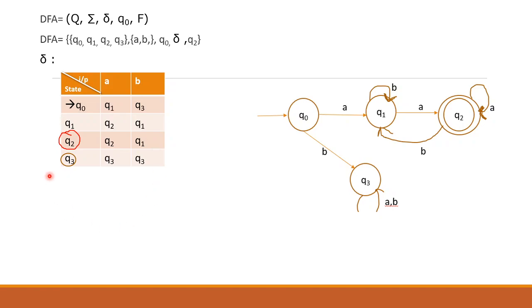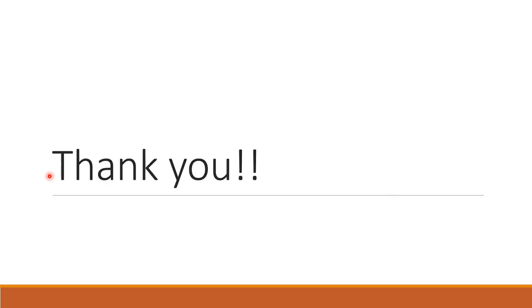So this is the state input table. This is our final DFA which accepts the language L = {awa | w ∈ {a,b}*}. Thank you for watching.